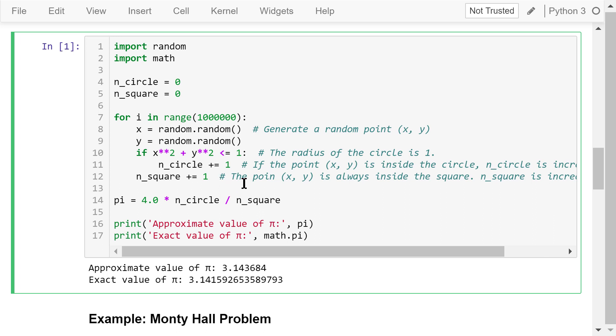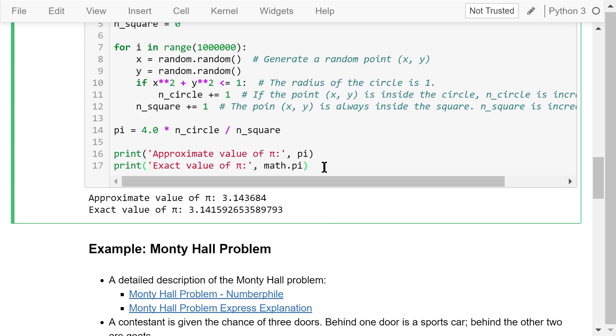After the simulation, we calculate pi's value using this formula. Finally, we print the approximate value of pi based on the simulation and the exact value of pi from the math library so we can compare. It turns out these two numbers are very close.